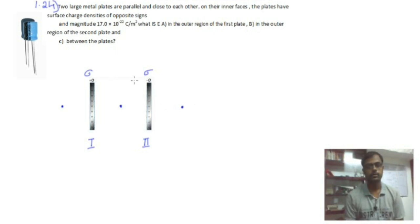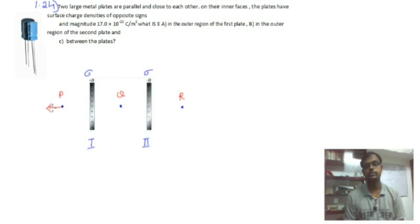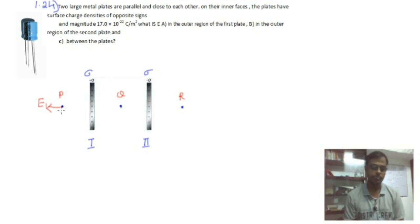Let's draw the direction of the electric field. Say this is point P, this is point Q, and this is point R. What is the electric field at point P due to the first plate? The first plate is positively charged, so the direction of the electric field is towards the left side — I'll call it E1. At the same point P, there is an electric field due to the second plate, which is negatively charged. Its direction will be towards the right — that is E2.